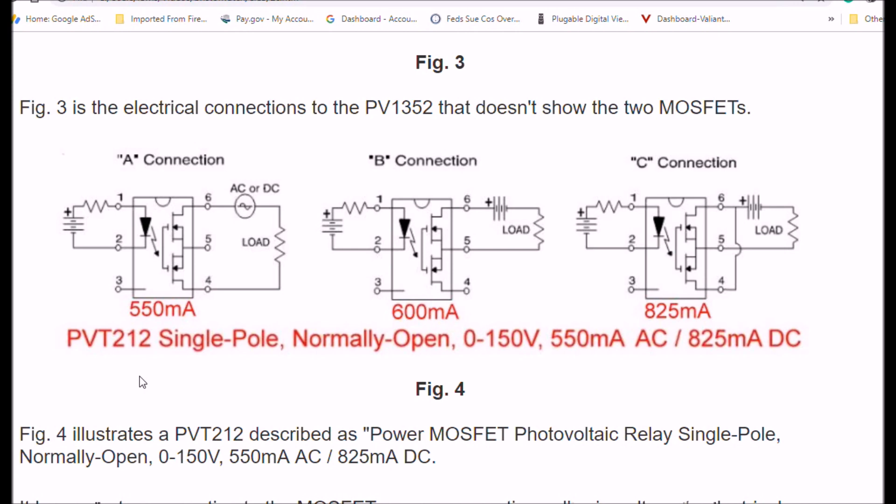And of course, this is up on one of my web pages, but this illustrates what you really have here. Here's your LED emitter, if you can see this. And you have two MOSFET transistors where the gates are connected together and the sources are connected together. But the output is taken off the collective drains.